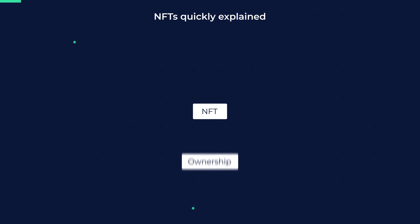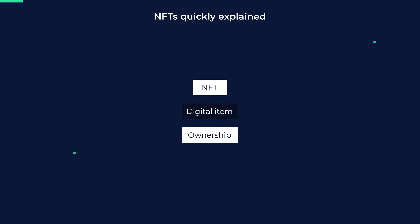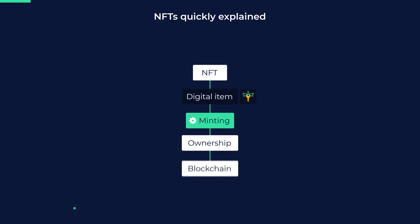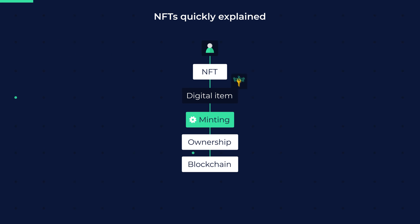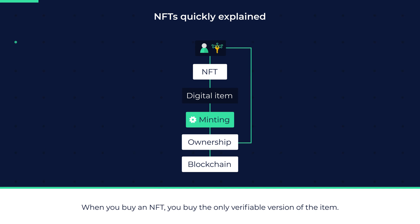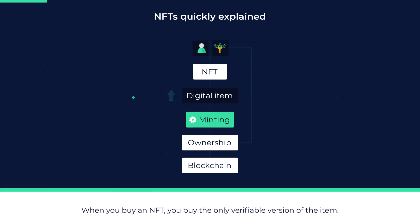NFTs are a way to verify true ownership of a digital item by attaching a unique key to it via a process called minting. When an NFT is minted, data that represents ownership is stored on a blockchain network, and whoever started the minting process is given the key that unlocks the ownership data on the blockchain. When you buy an NFT, you buy the only verifiable version of the item, which naturally increases its value because the item is unique in comparison to its non-NFT copies.